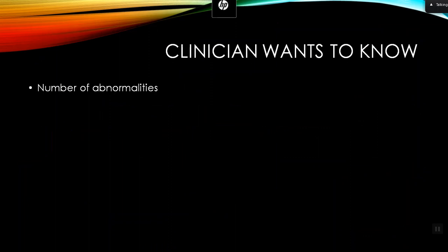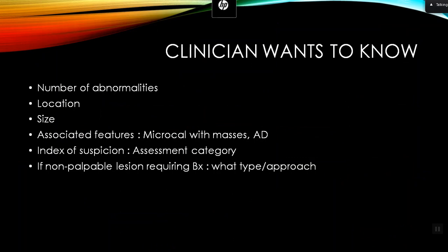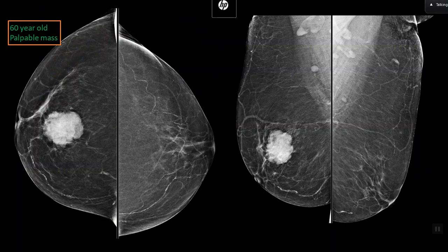Now the most common indication: newly diagnosed or suspected breast cancer. The clinician wants to know — how many abnormalities are there? Is it just the one being felt, or are there other smaller lesions? How close are they to the index lesion — is it multifocal or multicentric? What is the anatomical location, the size, are there microcalcifications within or outside the lesion, what is the assessment category, and what is the best way to biopsy?